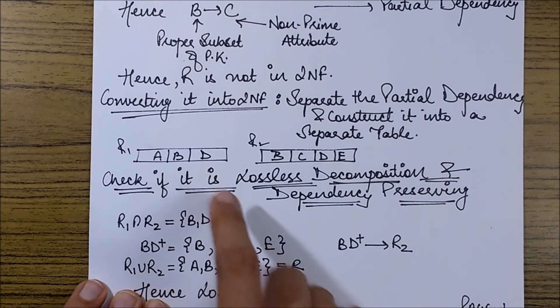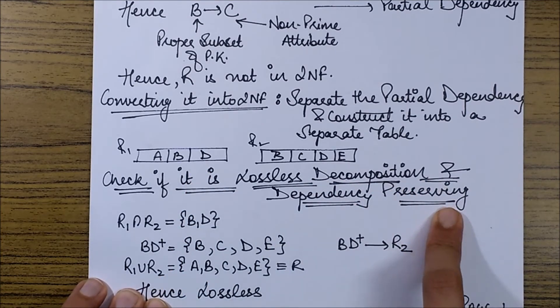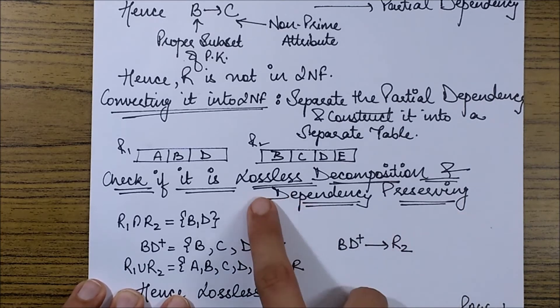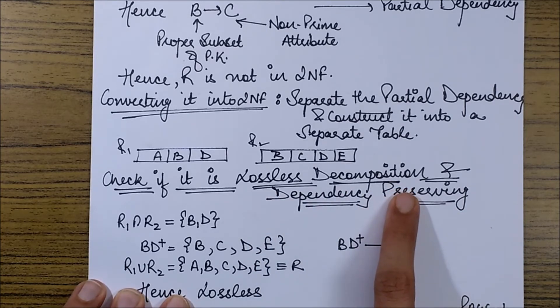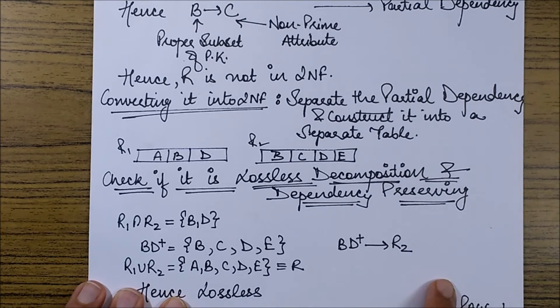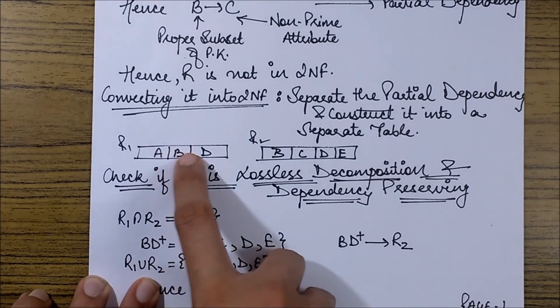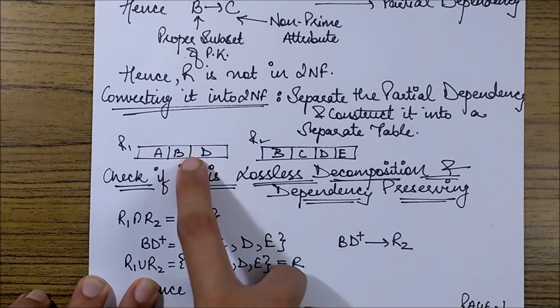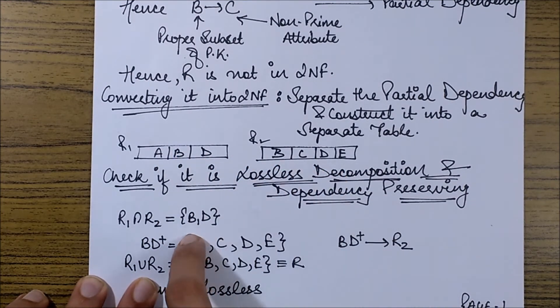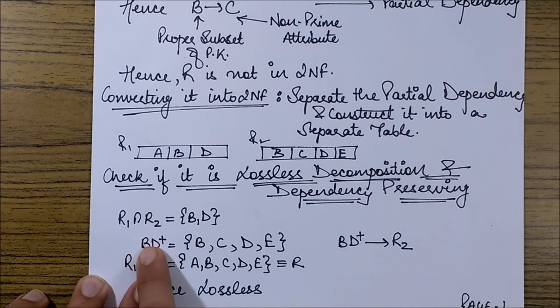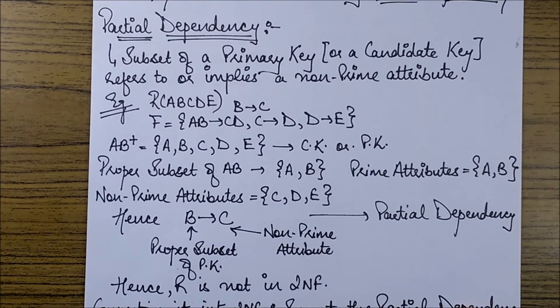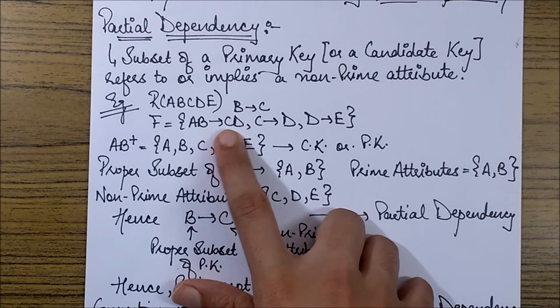Now let's check that whether it is a lossless decomposition and dependency preserving or not. For lossless decomposition we know that there were 2 checks. In case you want to recall you can please view the previous video. I am starting with the intersection process. R1 intersection R2 as you can see are B and D. B and D are common. So we perform its closure.